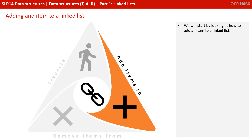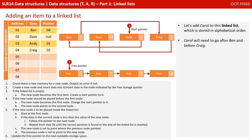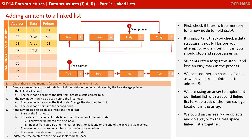We will start by looking at how to add an item to a linked list. Let's add Carol to this linked list, which is stored in alphabetical order. Carol will need to go after Ben and before Craig. First, we check if there is free memory for a new node to hold Carol. It's important that you check a data structure is not full before you attempt to add an item — if it is, you should stop and report an error. Students often forget this step and lose an easy mark in the process. We can see there is space available as we have a free pointer set to address 5. We're using an array to implement our linked list with a second linked list to keep track of the free storage locations in the array. We could just as easily use objects and do away with the free space linked list altogether.